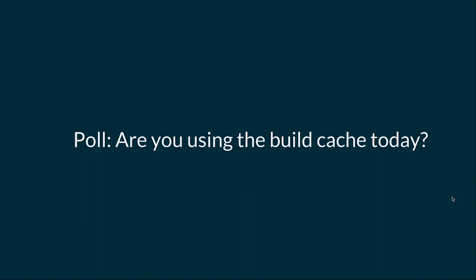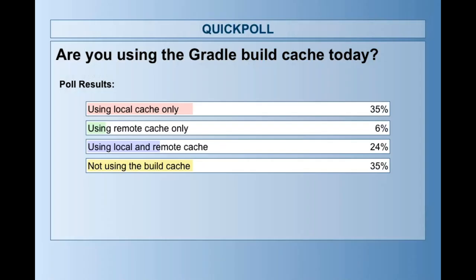Our first poll asks who's using the build cache today. Results show 35% using the local cache only, a good amount of folks not using the build cache at all, and only 6% using the remote cache. That's pretty interesting if you're using the remote cache only — we'll get more into that later.